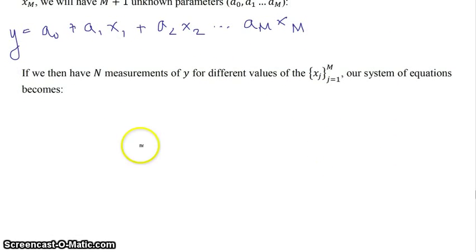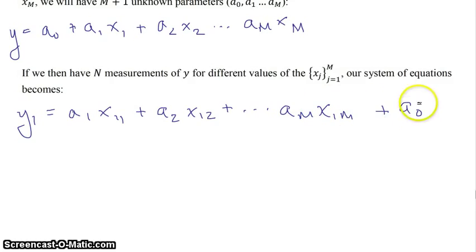And we have n measurements for y and for different values of these x's. Then our system of equations becomes y1 is equal to a1 x11. So the first measurement in x1 plus a2 x12 plus dot dot dot, am x1m. Oh, and I forgot a0. So plus a0. Now note, this x11 is the first measurement of x1. This would be the first measurement of x2. This is the first measurement of xm.